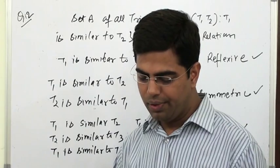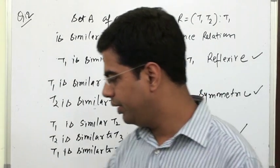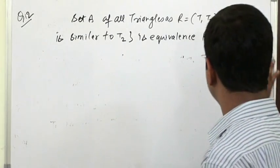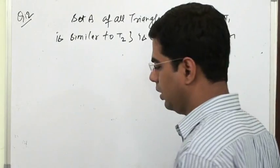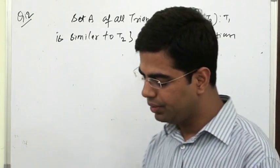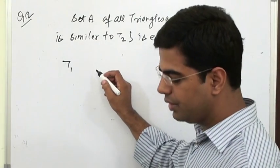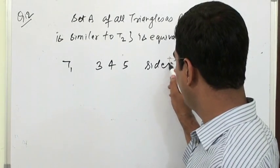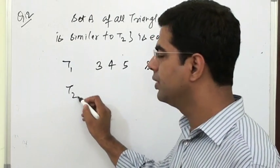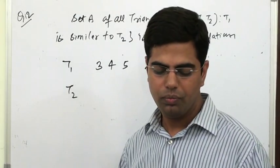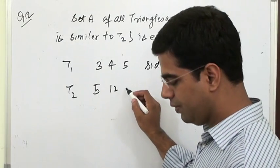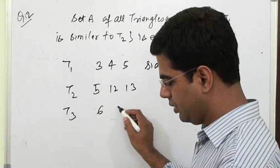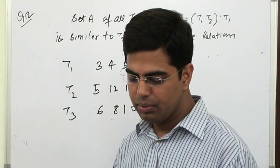यह part complete हो गया जहाँ Equivalence दिखाना था। अब इसके आगे: Consider 3 right-angle triangles. Triangle T1 की sides हैं 3, 4 और 5। Triangle T2 की sides हैं 5, 12 और 13। Triangle T3 की sides हैं 6, 8 और 10।